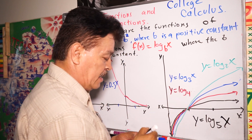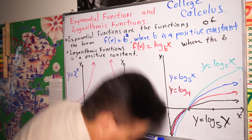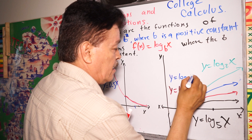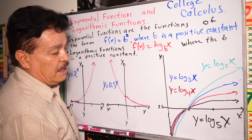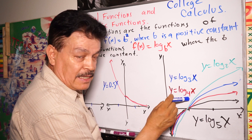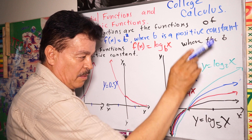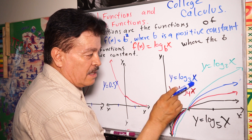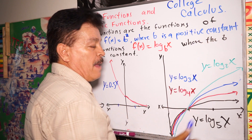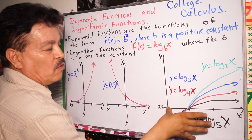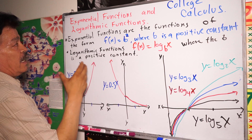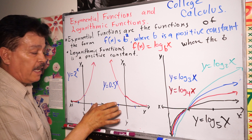So when you increase the base, the graph is lower. Log base 5 is the bottom one — the lowest. When the base is smaller, like 2, the graph is upper. Log base 2 is the highest. This is the logarithmic function. Here is a picture showing how the logarithmic function and the exponential function look.